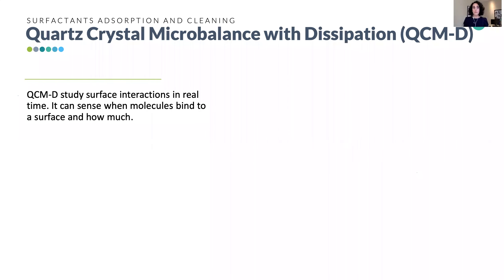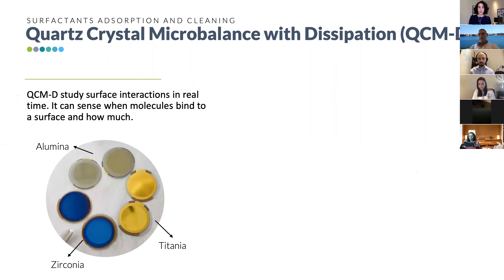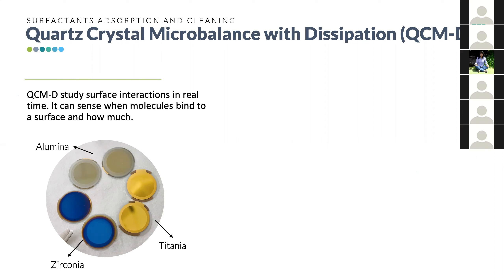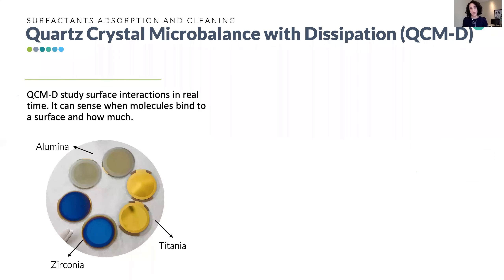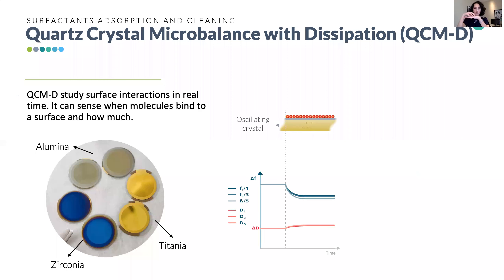The methodology we used was QCM-D — Quartz Crystal Microbalance with Dissipation — which has been extensively used in membrane fouling, mostly in polymeric membranes, with few studies done on ceramic membrane materials. QCM-D is a very sensitive balance that in real time measures not only mass but also the mechanical properties of substances. The sensor is a quartz crystal resonator coated with different materials — in our case alumina, titania, and zirconia. When something adsorbs, the resonance in different overtones is disturbed, showing a decrease in frequency and an increase in dissipation, which is translated into mass using models.